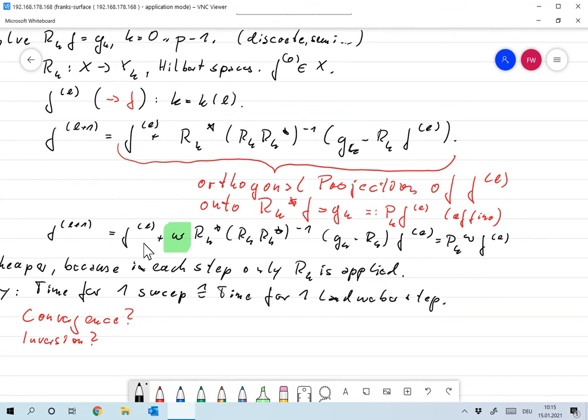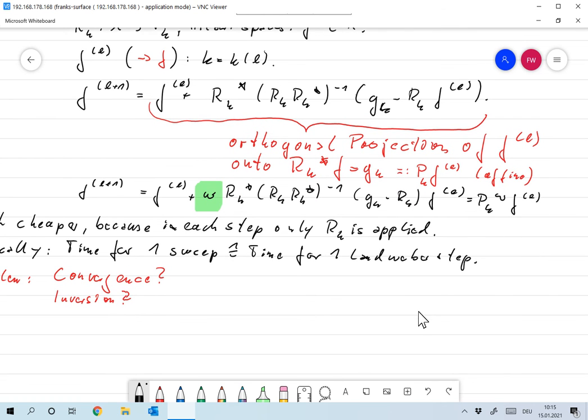What you usually do when you have this kind of iteration techniques, you introduce an iteration parameter, and that's something we want to do here as well. So f_l+1 is f_l plus omega times that would be the structure of the algorithm we'll be using from now on. And also we'll write this in obvious fashion as P_k omega times f_l, and again that's an affine operator.